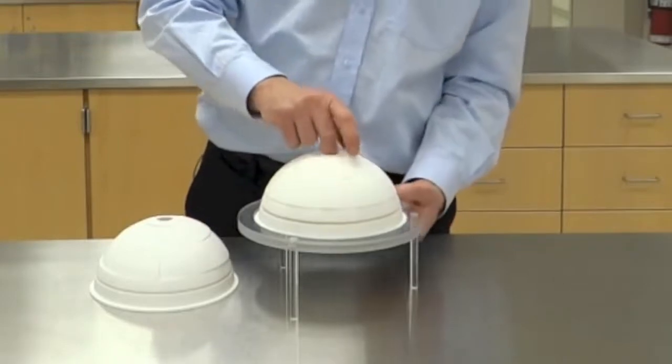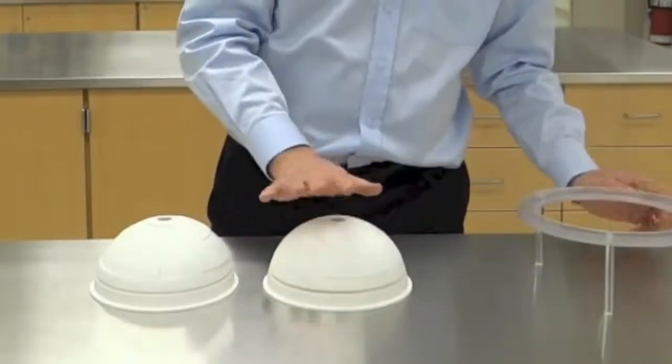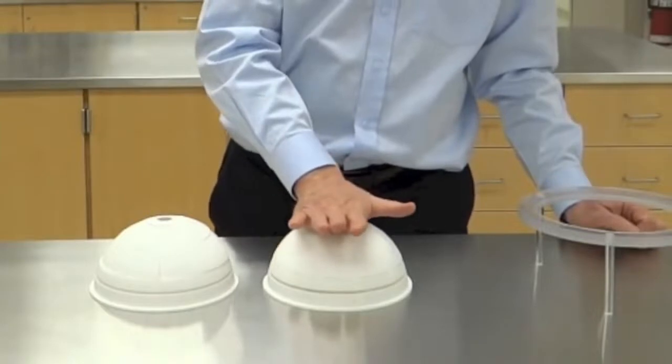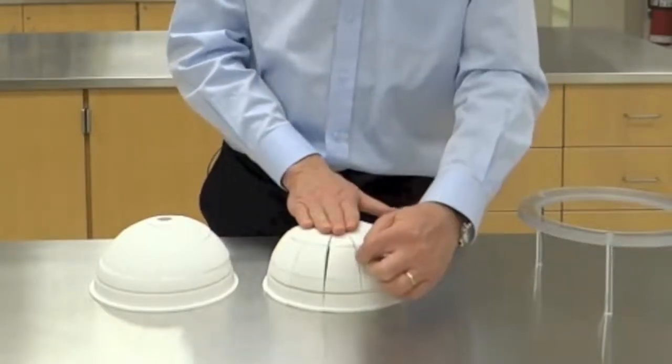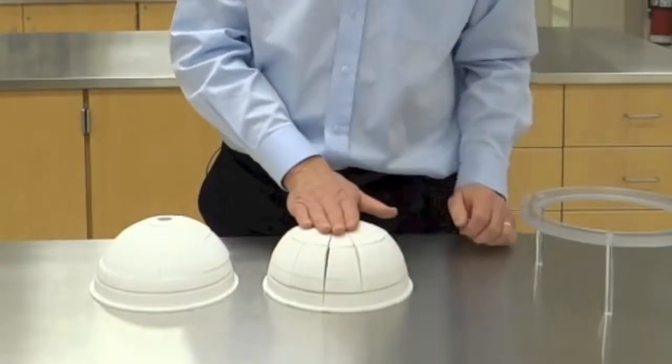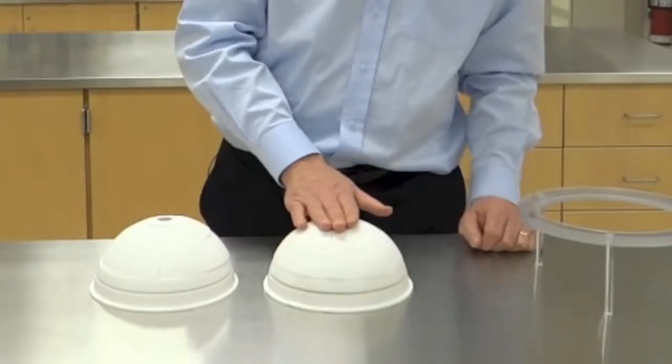If I remove the rubber band from the bottom, so if I load it on the table, you can see that what would happen is that the individual stones or blocks in the dome would separate and the dome would fall down.